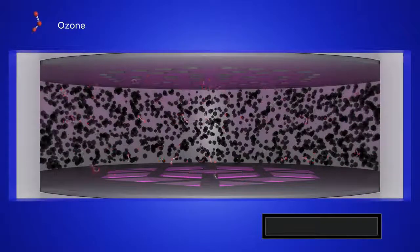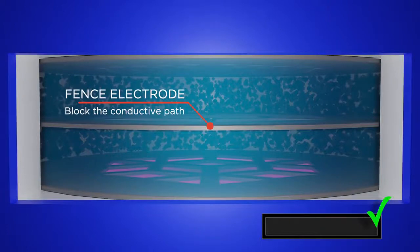Even if the Ion Science sensor chamber becomes contaminated, the fence electrode blocks the path between the two main electrodes. This practically eliminates the effects of humidity.